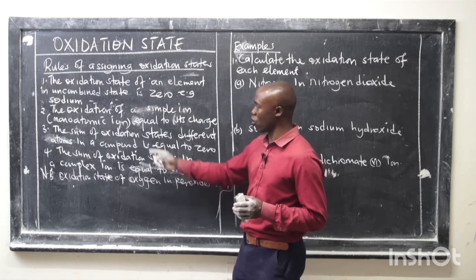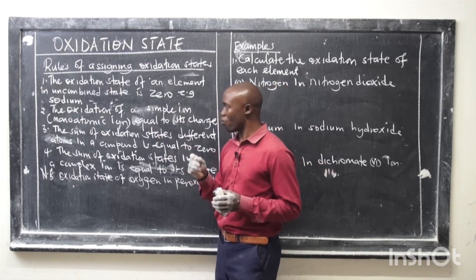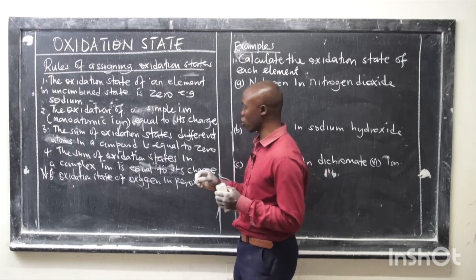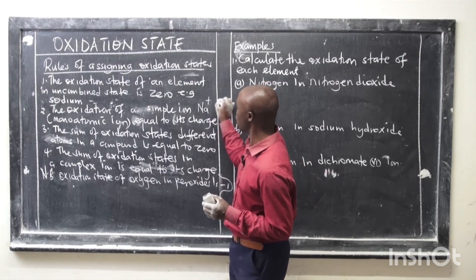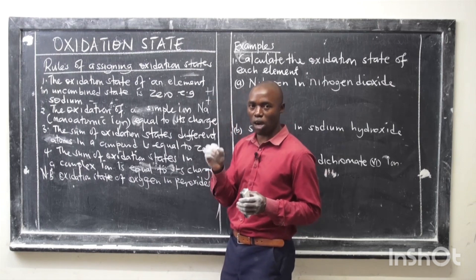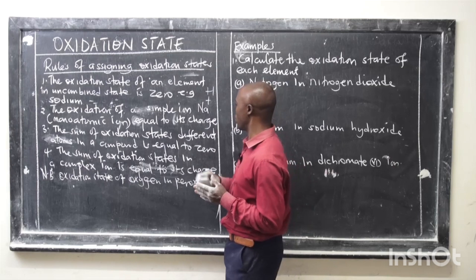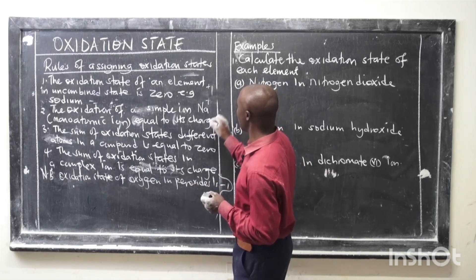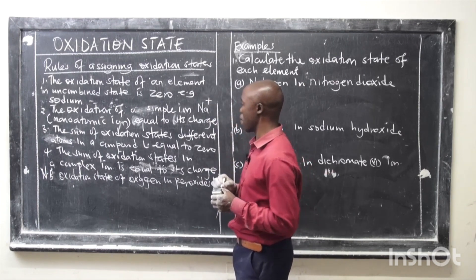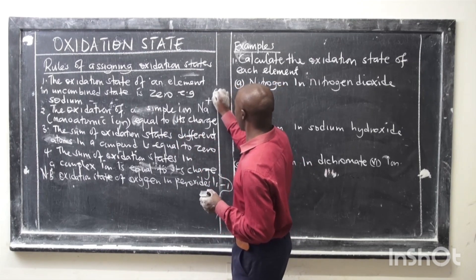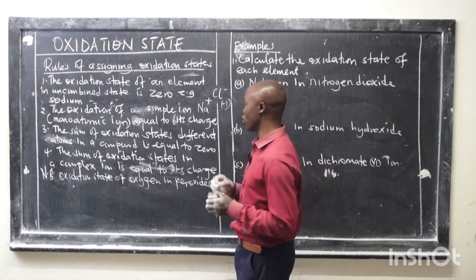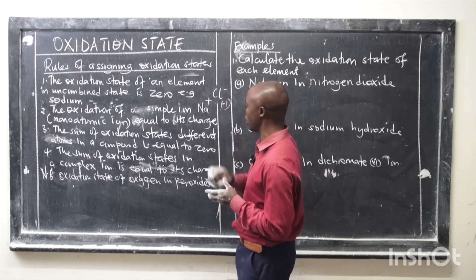Rule number two: the oxidation state of a simple ion — or monoatomic ion, meaning an ion formed from only one atom — is equal to the charge of the ion. For example, the oxidation state of sodium ion is positive one (+1). You put the plus sign in front of the number, not as a superscript or subscript. Similarly, the oxidation state of chloride ion is negative one (−1). Remember, valence would be one without a charge, but oxidation state always has a charge.